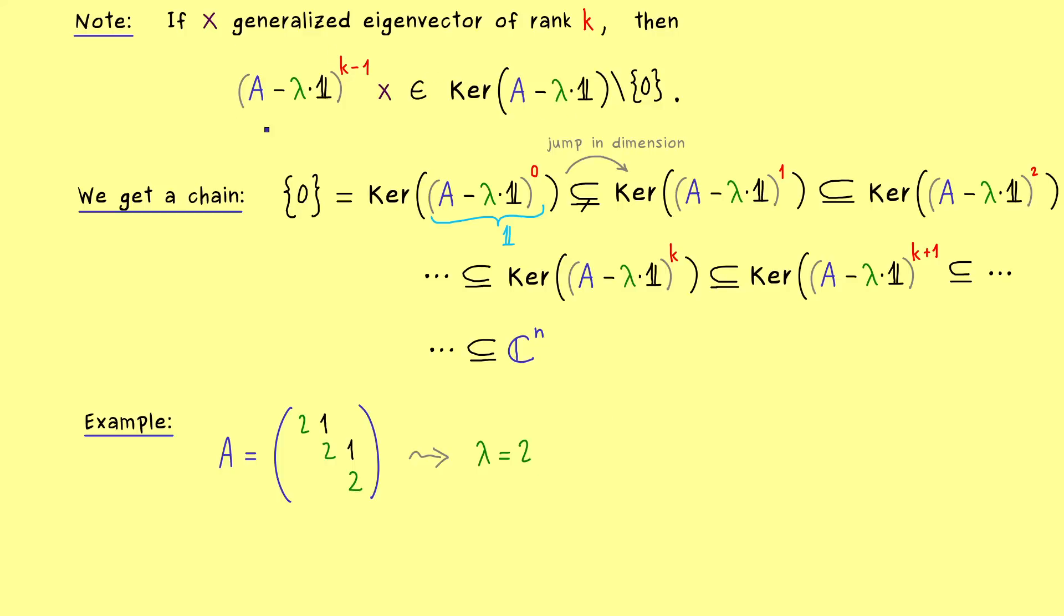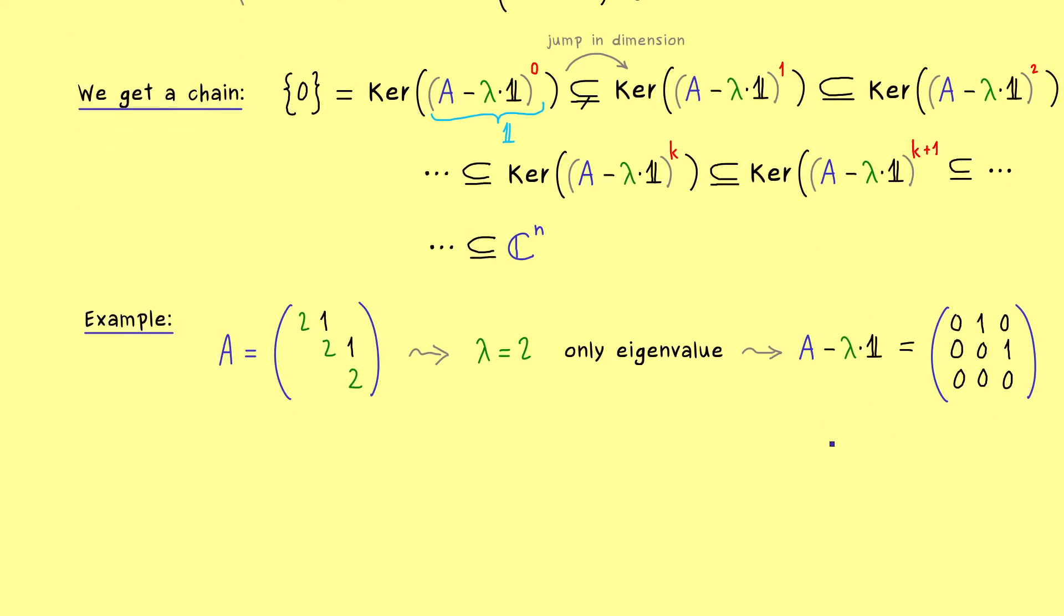So this means we don't have to distinguish between the eigenvalues, we just have one and then we can calculate the generalized eigenspaces. Hence we have to calculate the powers of the following matrix. This is quite simple, we subtract 2 on the diagonal, so only the ones above the diagonal remain.